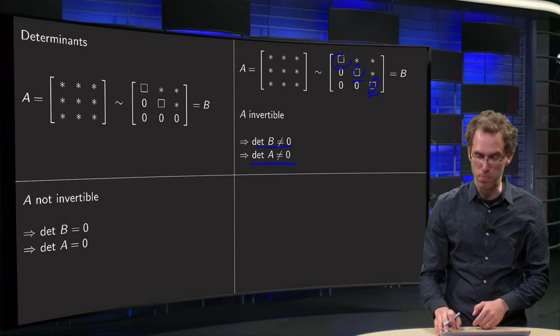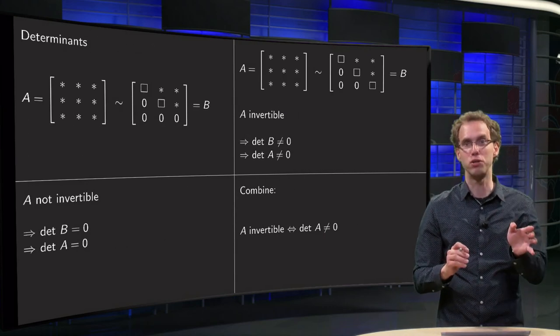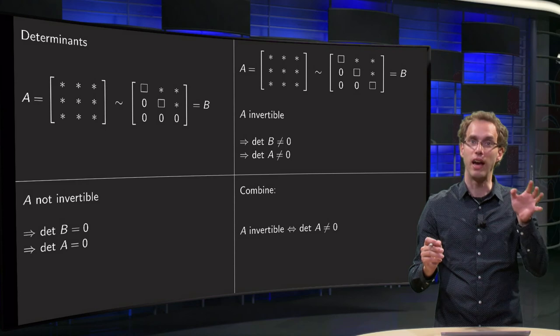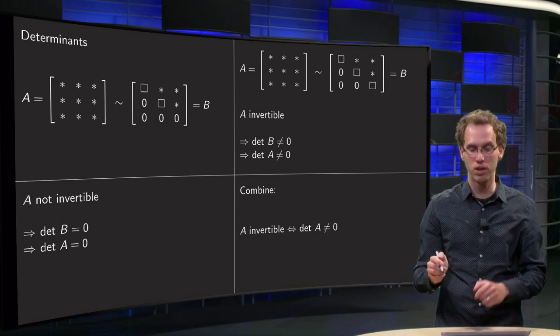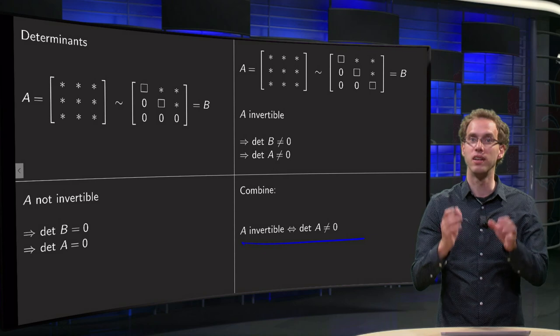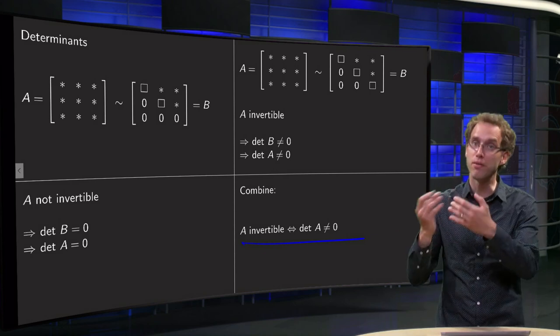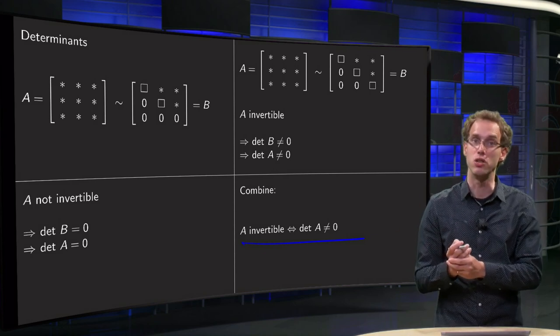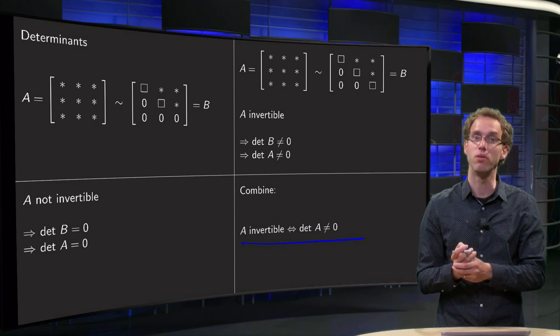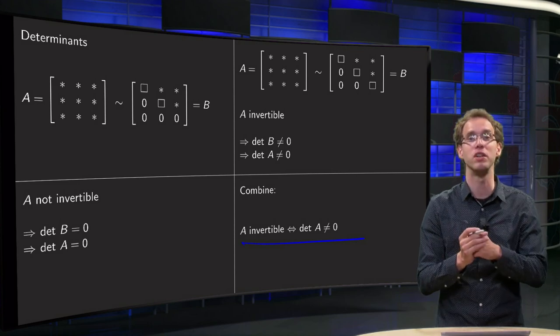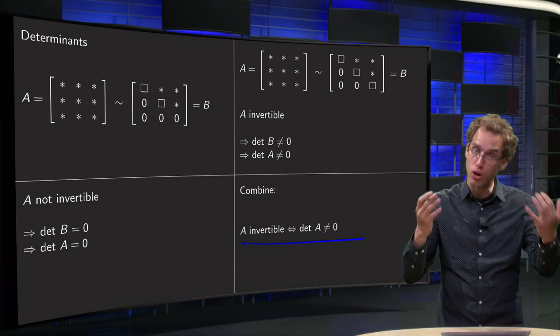So we can combine: A is not invertible means det A equals 0, and A is invertible means det A is non-zero. If you combine those two statements, you get A is invertible if and only if the determinant of A is not equal to 0. So the same as what we had for 2 by 2 matrices also holds for larger matrices.